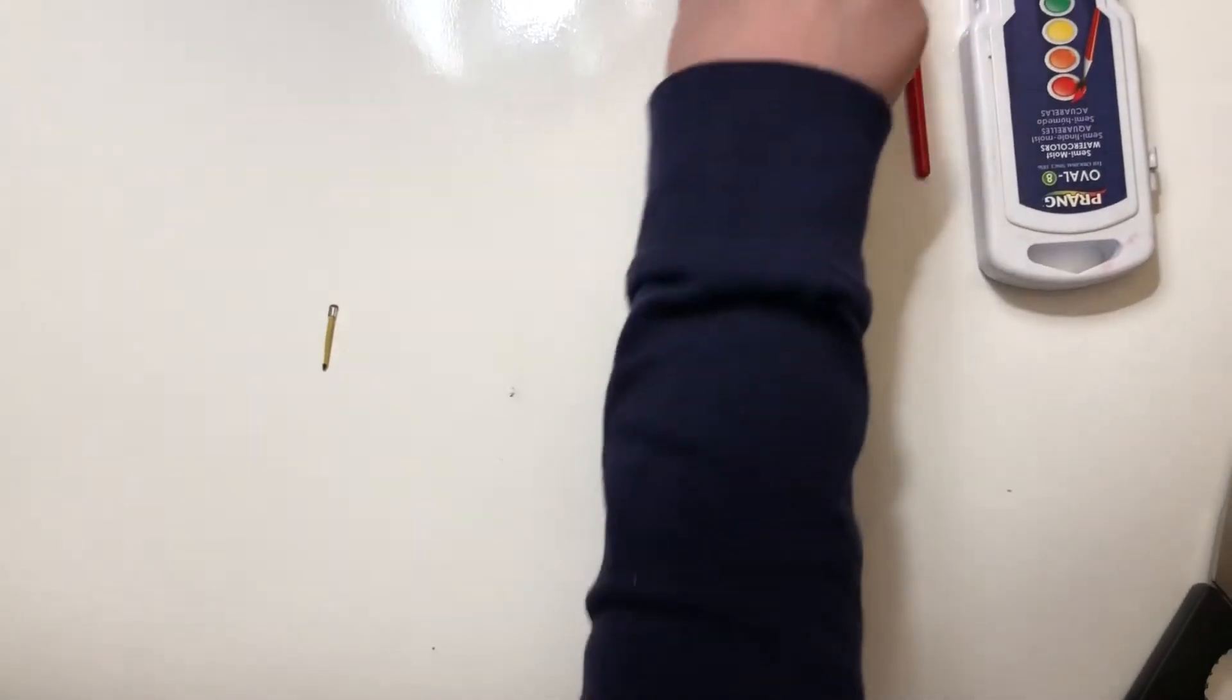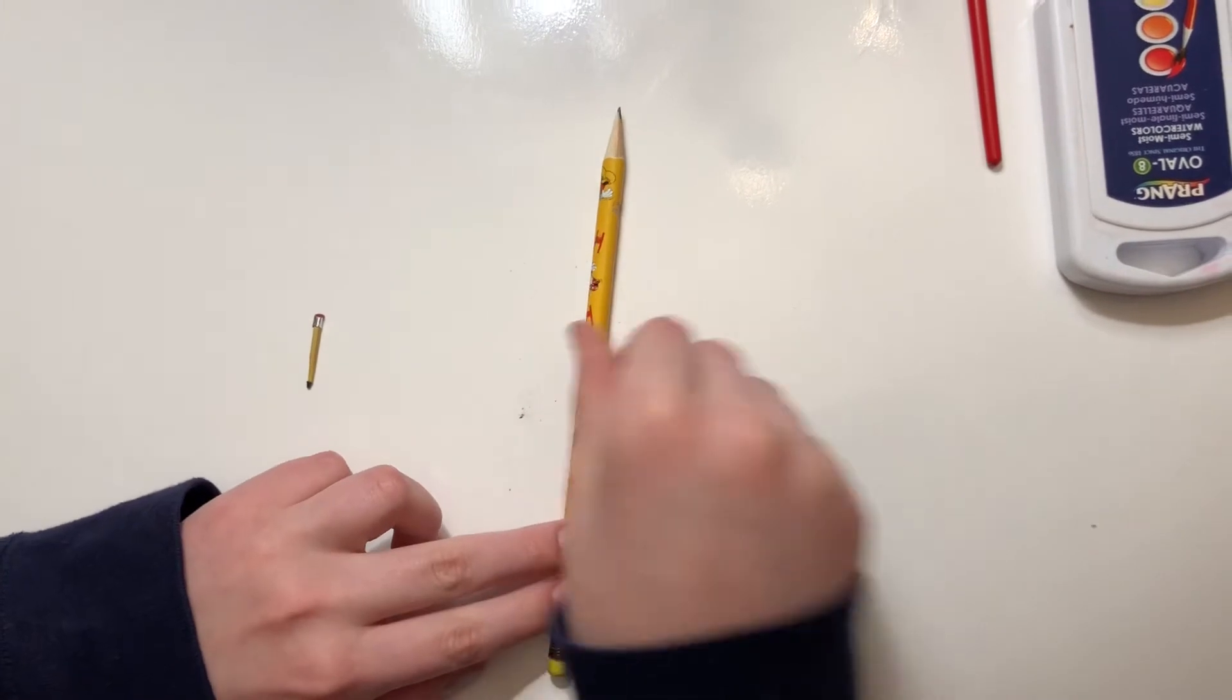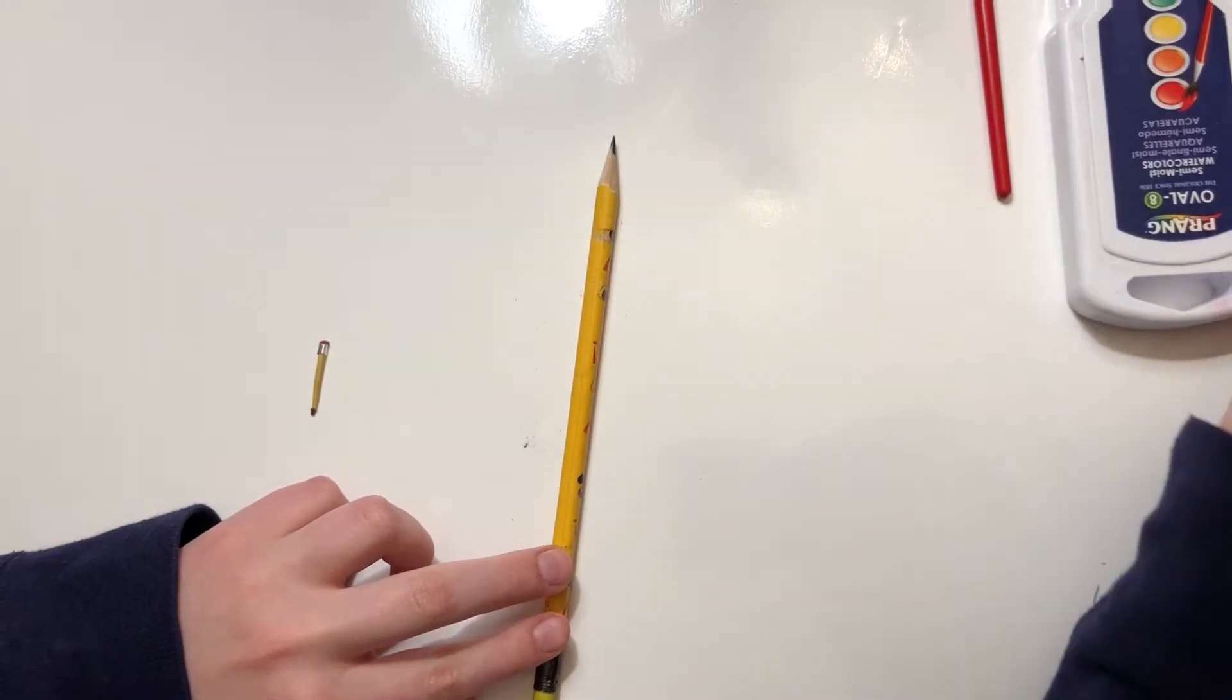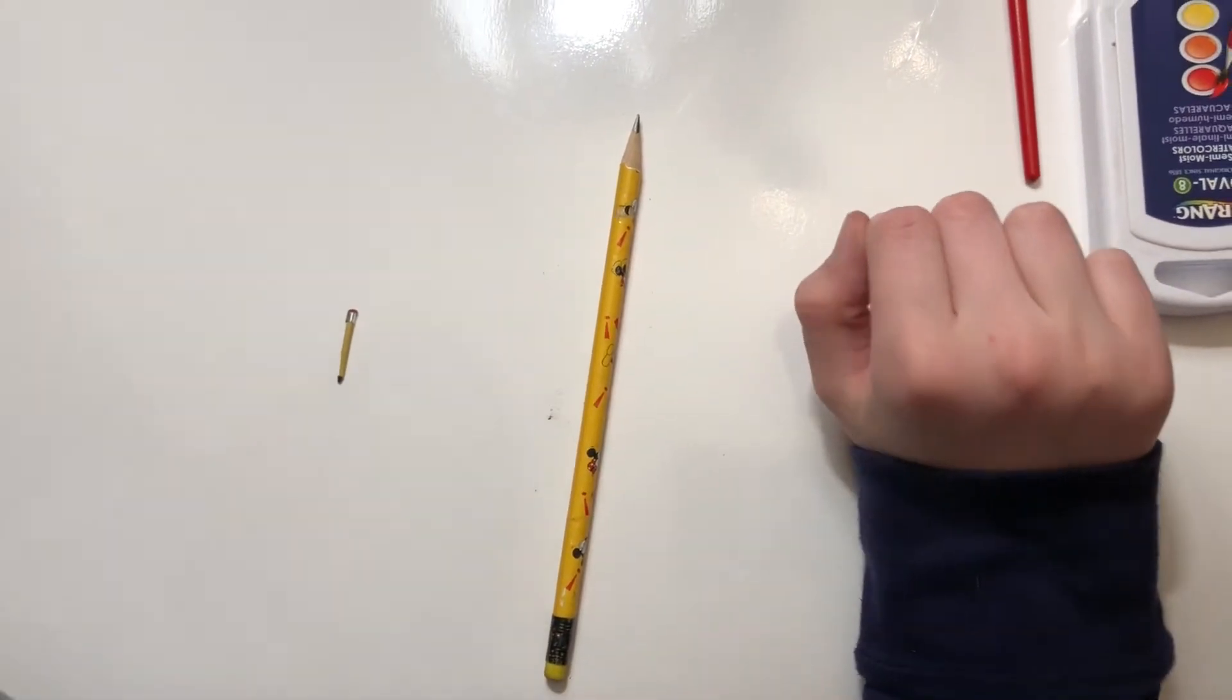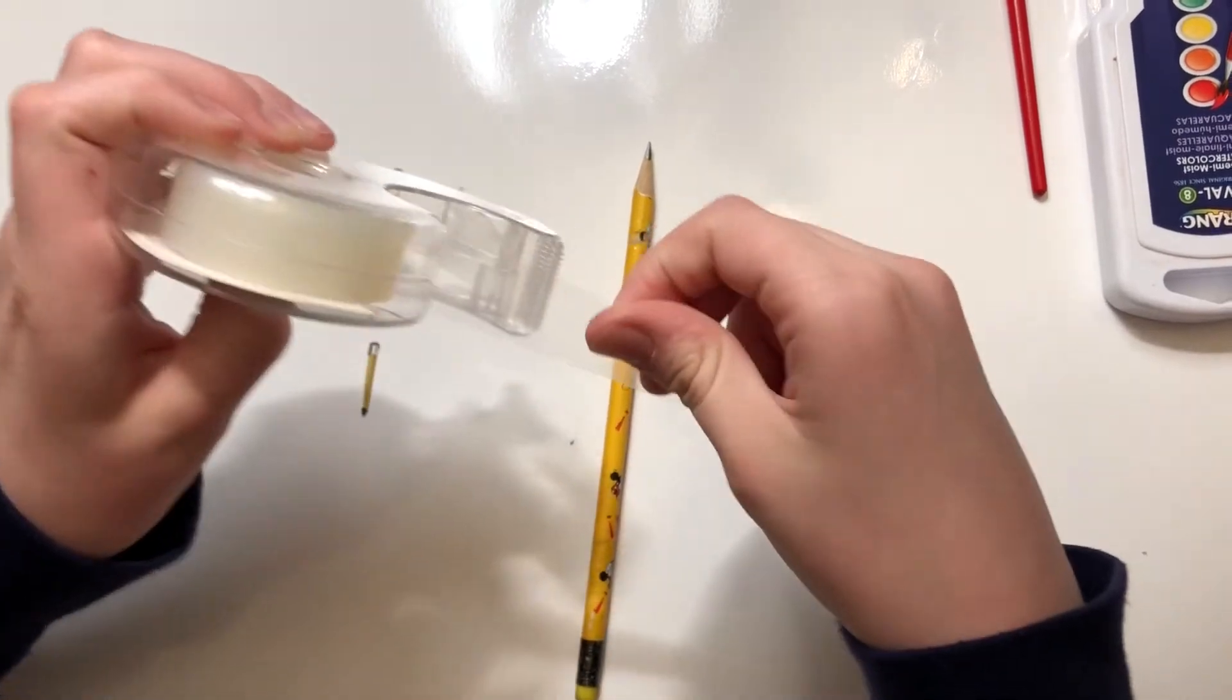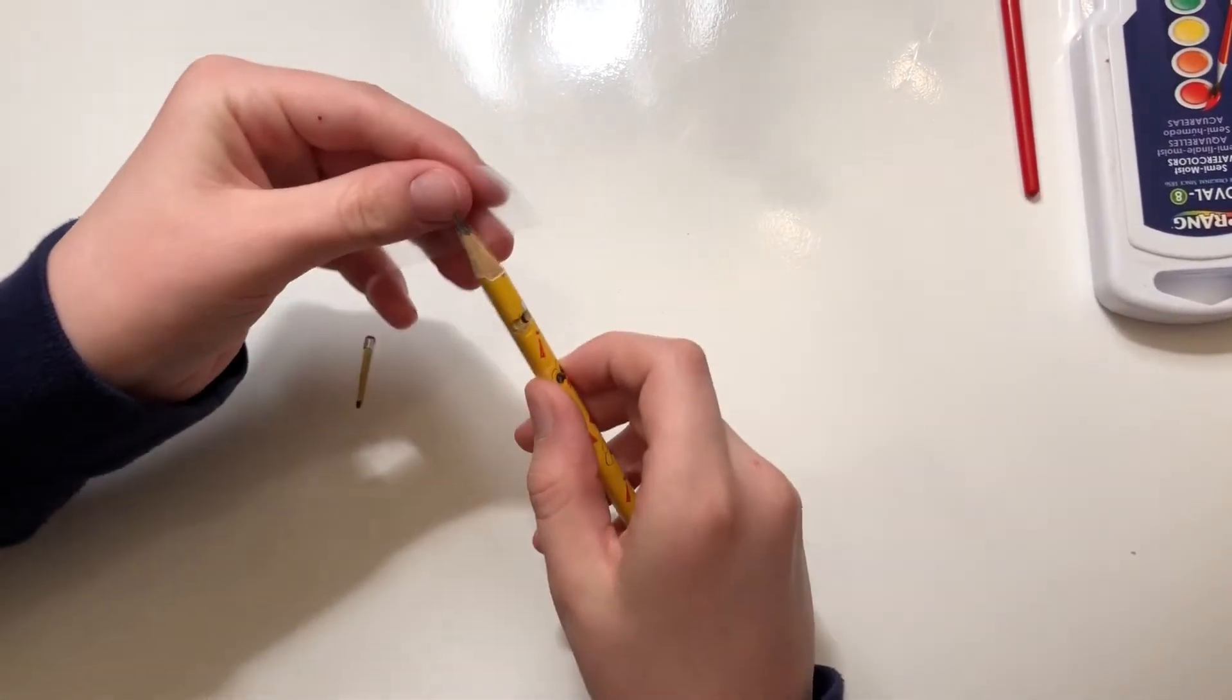So the next step is to take the pencil and you are going to cut it. But since this knife is really sharp, I'm going to have my mom do it. Before I do that, you can tear a little piece of tape and you can put it behind here.